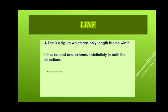Line can be extended indefinitely in both directions. As we see in the figure here, line AB has arrows at the end. That means AB is a line.